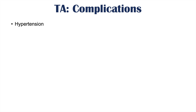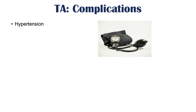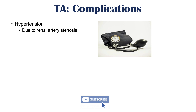Along with the absent arterial pulses, stenosis of affected vessels can lead to specific complications. Hypertension can occur due to renal artery stenosis — as the renal arteries become more stenotic, the kidneys sense decreased blood pressure and release renin, triggering a cascade that increases angiotensin II, ultimately leading to elevated blood pressure.